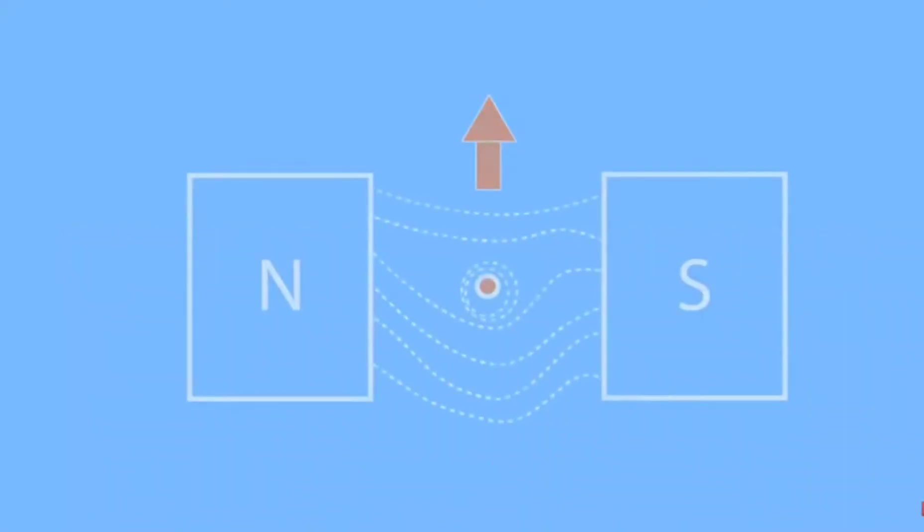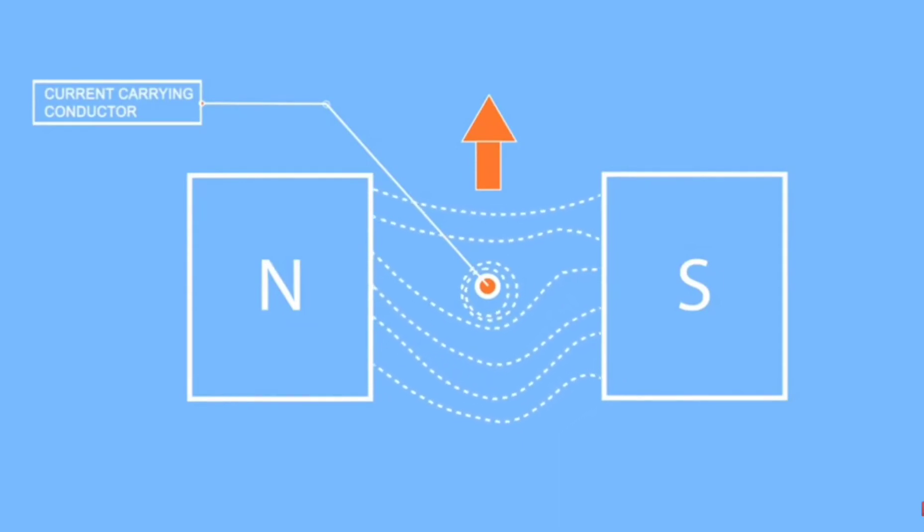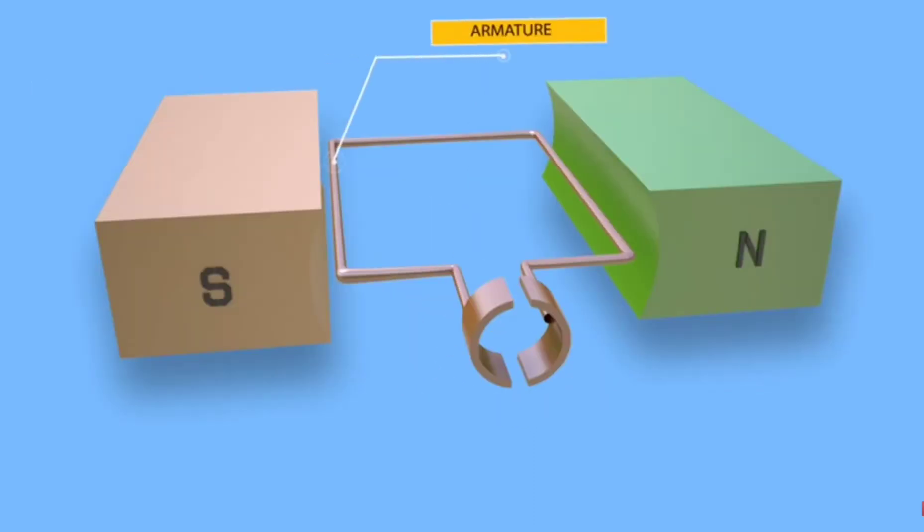The working principle of DC motor is very simple. When a current-carrying conductor is placed in a magnetic field, it experiences force in a particular direction. The basic construction of a DC motor contains a current-carrying armature connected to the supply through commutator segments and brushes.